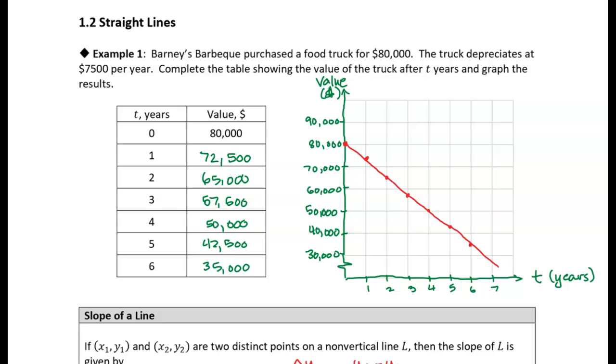So Barney's Barbecue purchased a food truck for $80,000, and the depreciation was $7,500 per year. So it's depreciating, the value is going down by $7,500 every year. We let t equals zero be the time when he first purchased that food truck. So when t is zero, then the value of this food truck is $80,000.